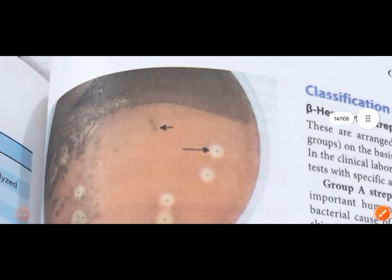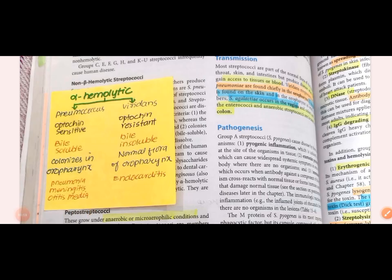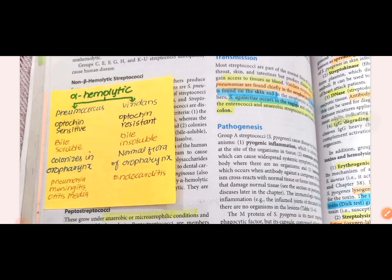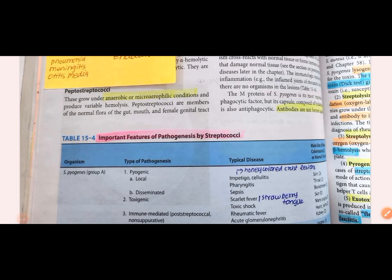For alpha hemolytic streptococci: S. pneumoniae and viridans streptococcus are both alpha hemolytic. They are separated by the Optochin disc test — S. pneumoniae is Optochin sensitive and bile soluble, while viridans is Optochin resistant and bile insoluble. S. pneumoniae normally colonizes the oropharynx and causes pneumonia, meningitis, and otitis media. Viridans streptococcus is normal flora of the oropharynx and can cause endocarditis.